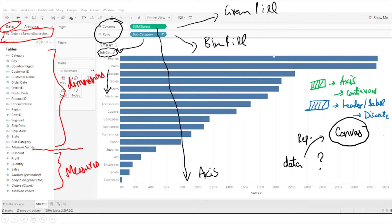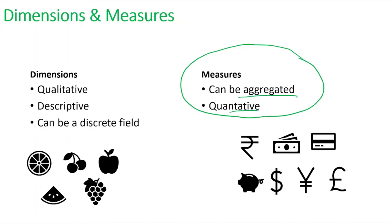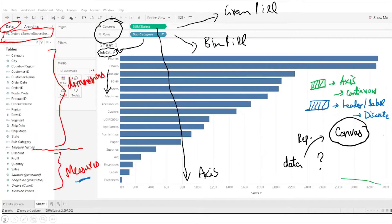Now let's understand measures first. Basically, whatever we can aggregate is known as a measure, and it should be a quantitative field — like a number field. For example, money is a quantitative field. You can calculate the total money spent, the average money spent, the maximum, or the minimum — you can change the aggregation to sum, average, max, or min.